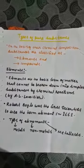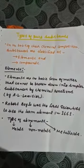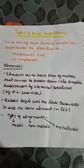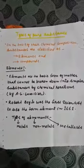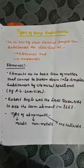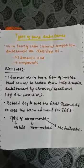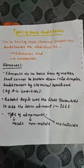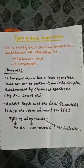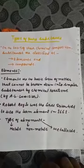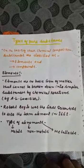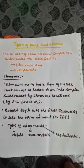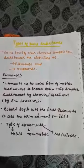There are many more examples in your book regarding physical and chemical changes — please go through them. Now, types of pure substances: on the basis of chemical composition, substances are classified as elements and compounds. Elements are the basic form of matter that cannot be broken down into a simpler substance. Robert Boyle was the first scientist to use the term 'element' in 1661. There are three types of elements: metals, non-metals, and metalloids.